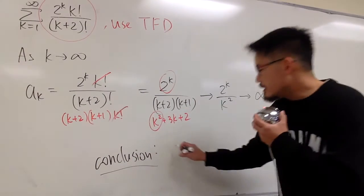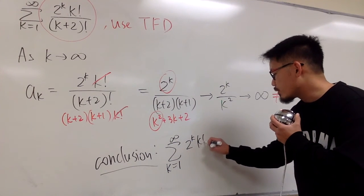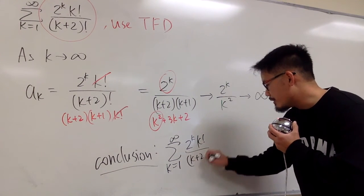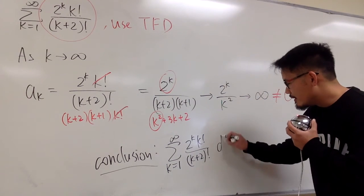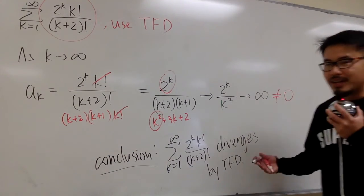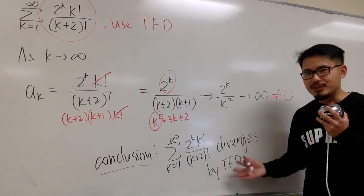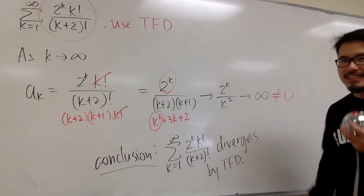The conclusion is, the original series, sigma with k goes from 1 to infinity, 2 to the k times k factorial, over k plus 2, in a parenthesis, factorial. This right here diverges, by the test for divergence, because ak doesn't even approach to 0. And this is enough to show that the original diverges. That's it.